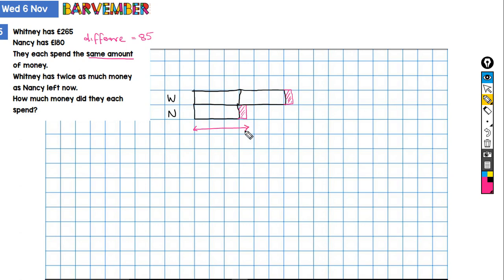And what do we know? So this is the beginning situation. Let's have a look. So at the beginning, Nancy had this amount of money, which was 180. And at the beginning, this is what Whitney had, which was 265. And the difference between 265 and 180 is 85. So that's the difference between this original amount that Nancy had and the original amount that Whitney had.